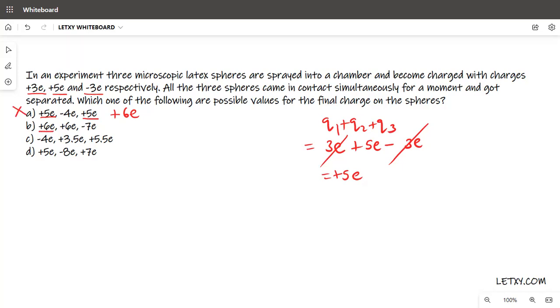Option B: +6e, +6e, -7e. Adding: 6 plus 6 is 12, 12 minus 7 equals +5e. This could be the correct option, but don't conclude yet. We also have to check options C and D.